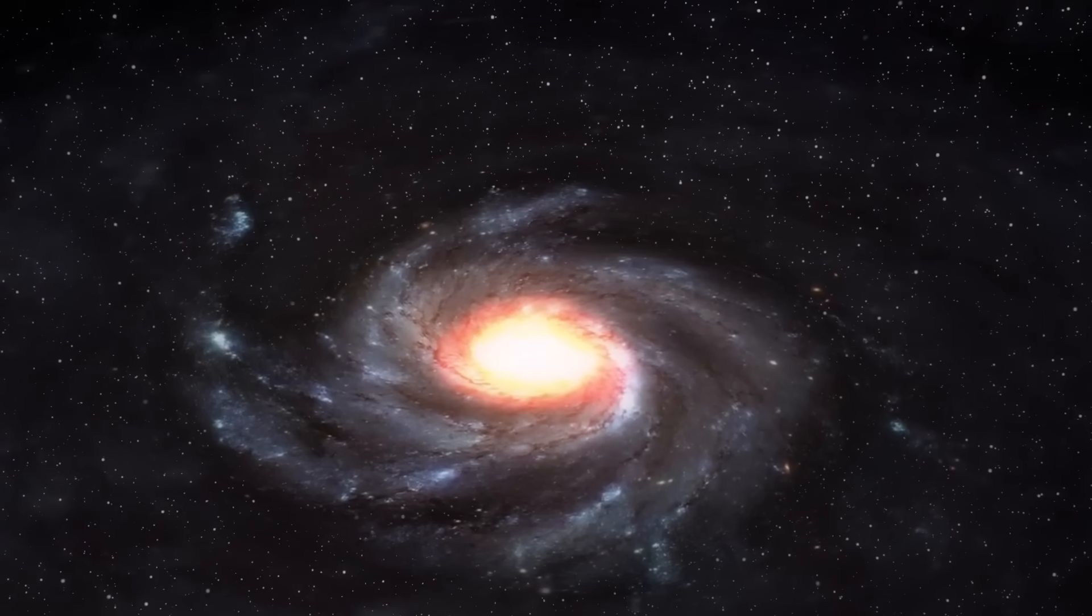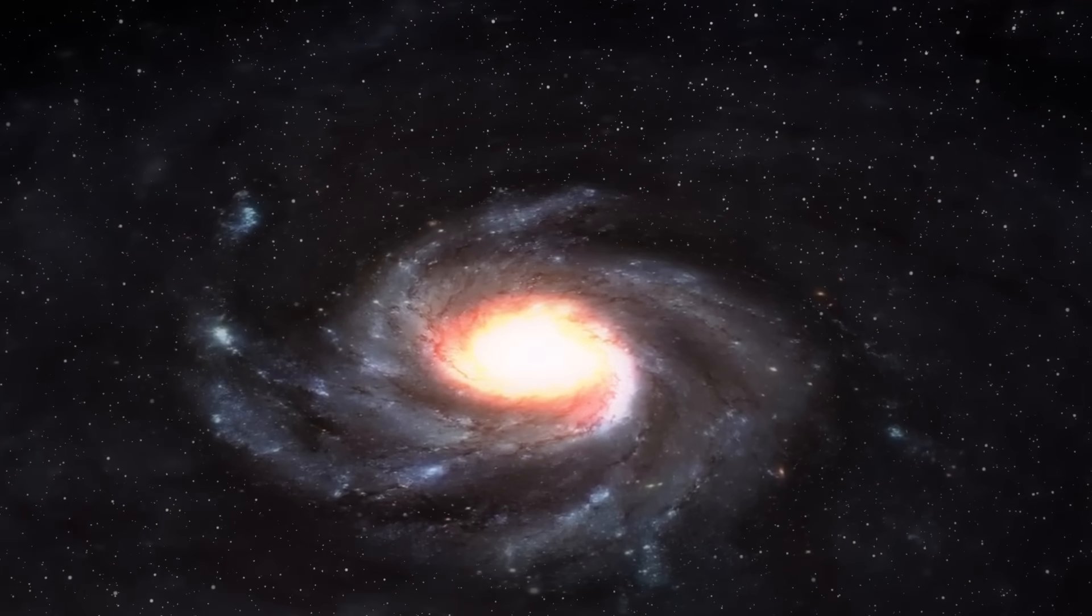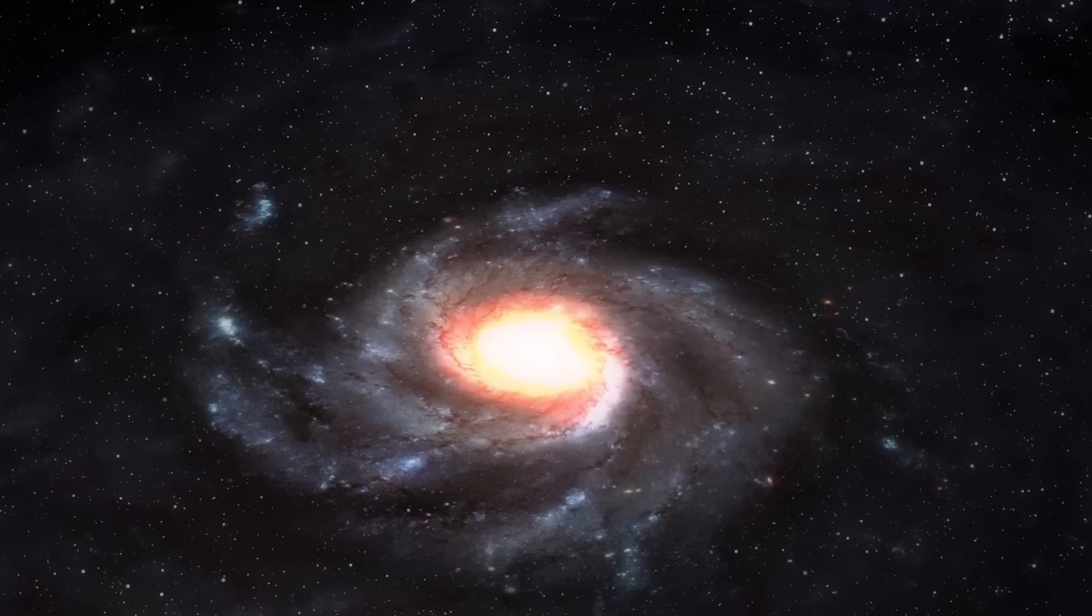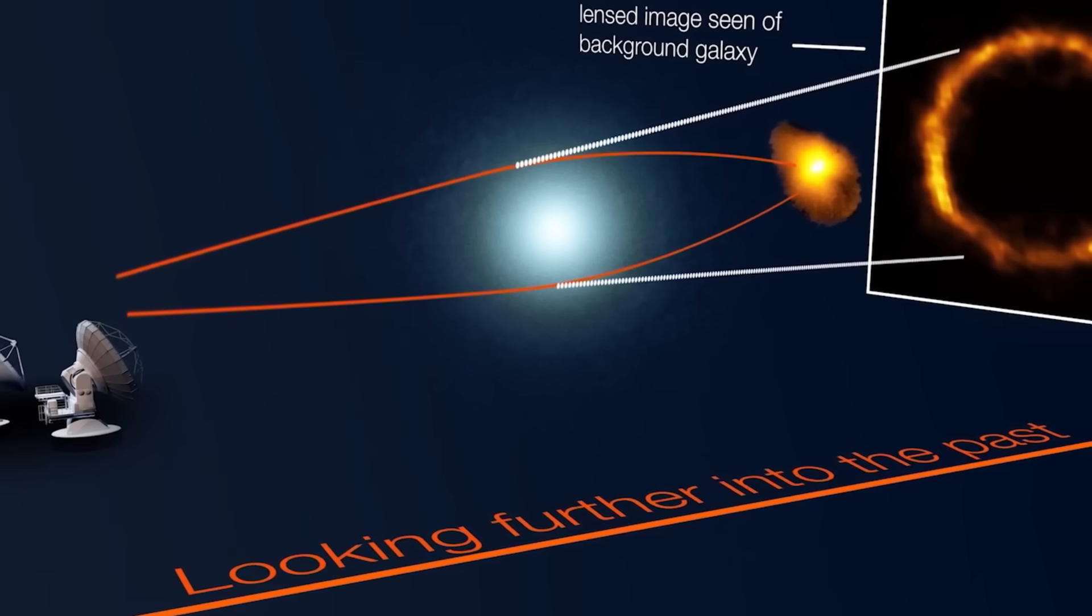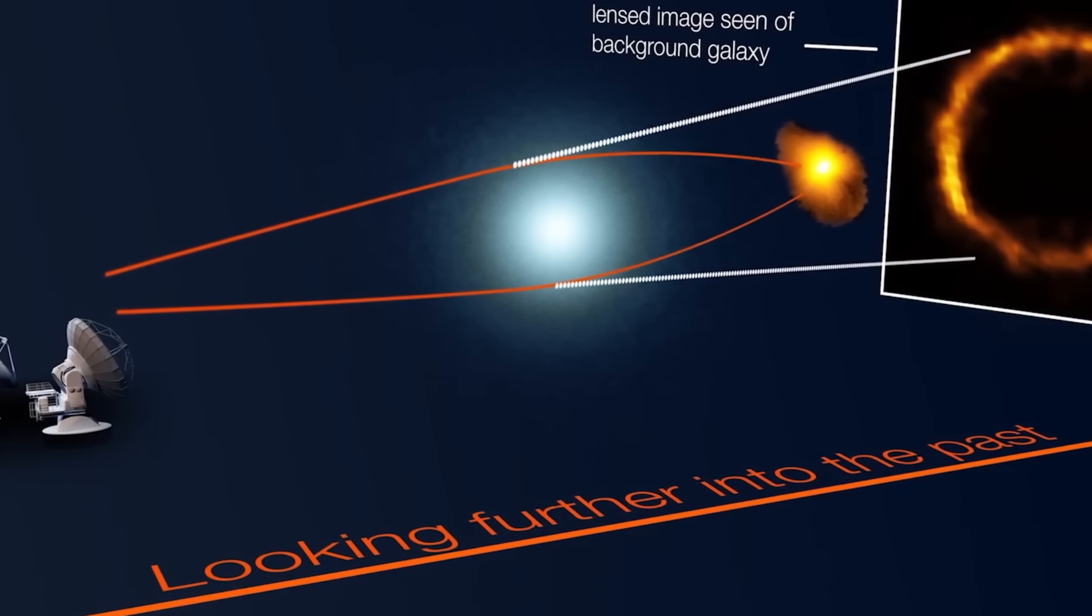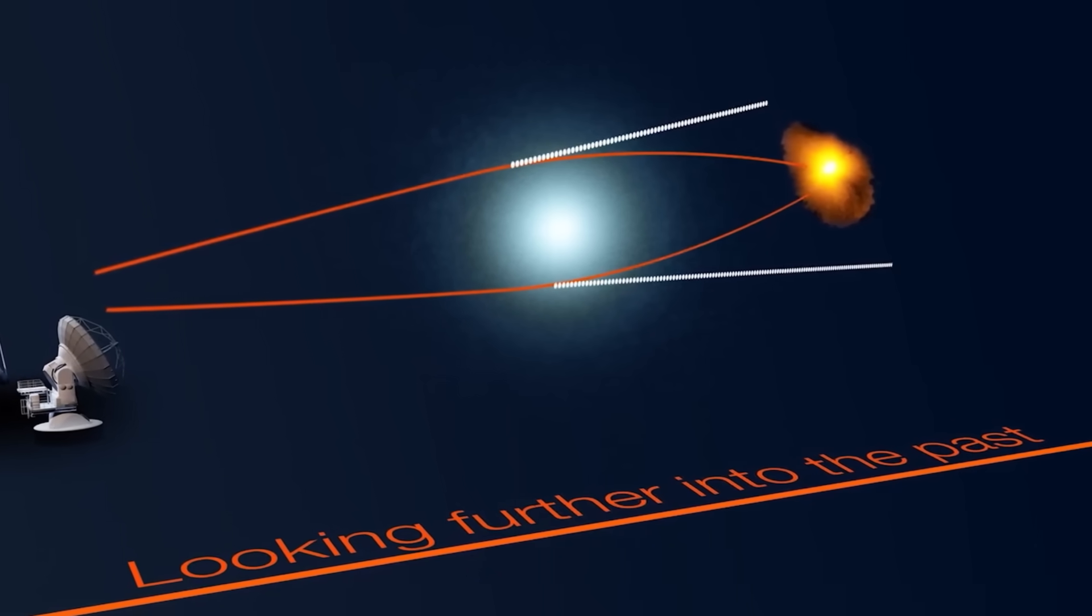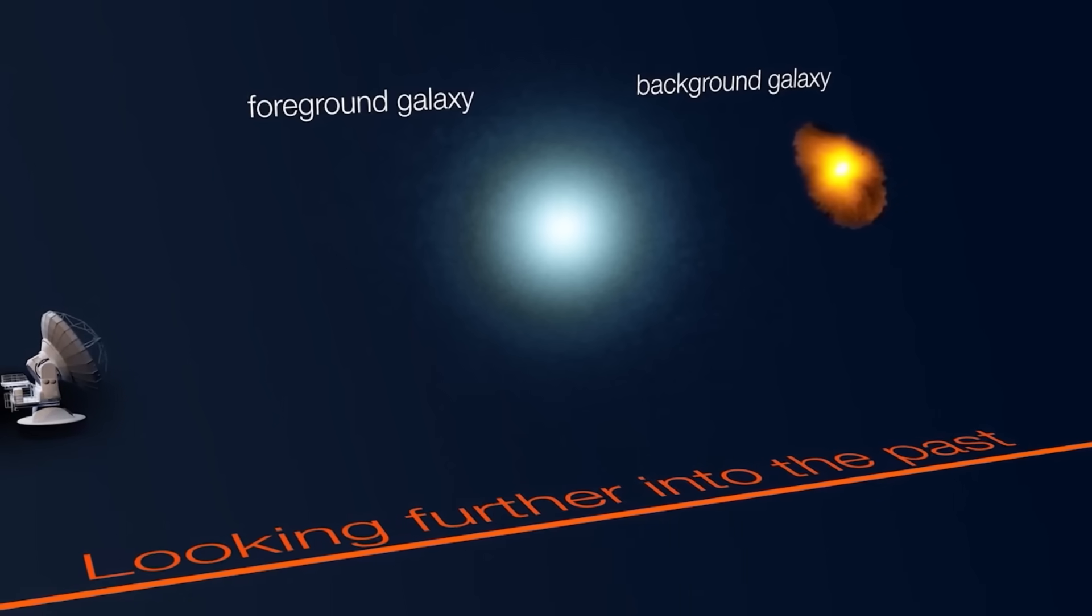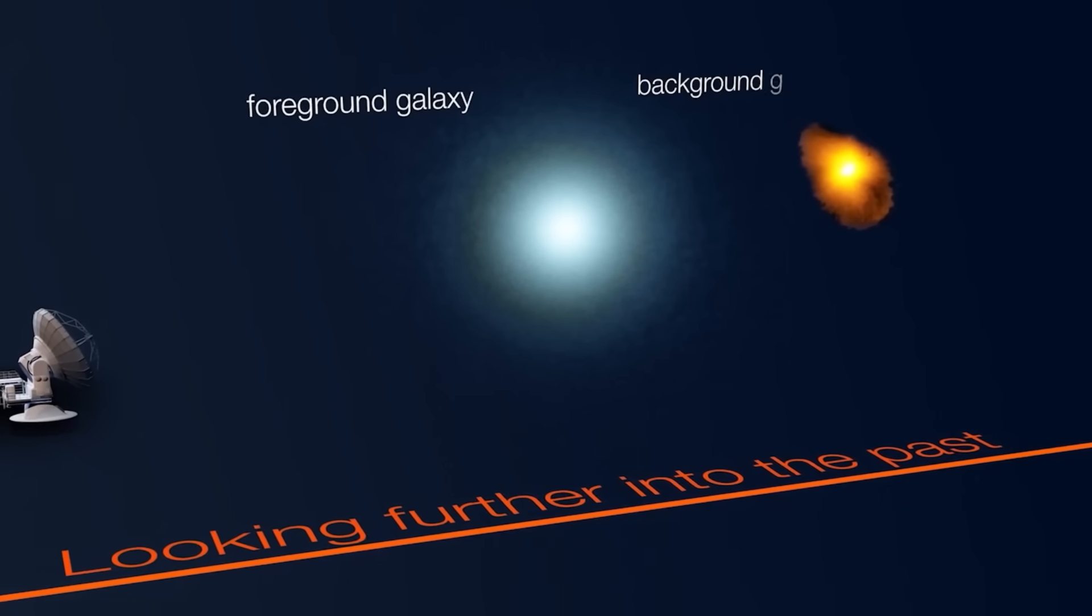While analyzing light from some of the most distant objects in the universe, James Webb captured what's known as an Einstein ring—an optical illusion caused by gravitational lensing. But this ring wasn't just rare, it was nearly perfect: a full, undistorted circle of light produced by a galaxy 12 billion light-years away.